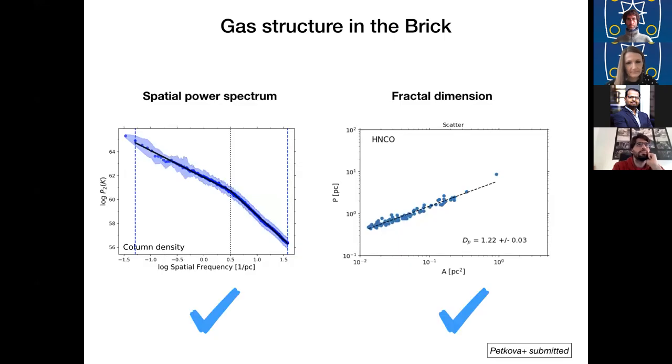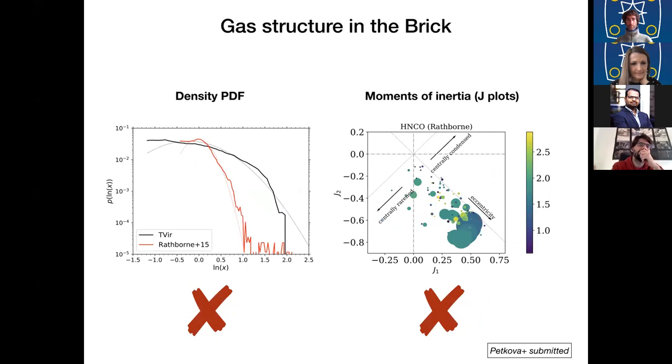Now we have our synthetic observation and we're ready to compare its structure to the real observed Brick. In order to do that, we've used several different ways to quantify structure. Here we see the spatial power spectrum and the fractal dimension. And for both of those we see very good agreement between the simulation and the observations. So far so good. But when we've looked at other ways of quantifying structures, such as the density PDF and the moments of inertia of the individual substructures within these clouds, we do see some discrepancies. This is indicative that while we can reproduce the global properties of the clouds pretty well just by considering the galactic potential, when we really want to reproduce the smaller scale structures we need extra physics. And one bit of extra physics that our results are starting to hint towards is that perhaps it would be quite crucial to include magnetic fields. This is our prediction going forward.